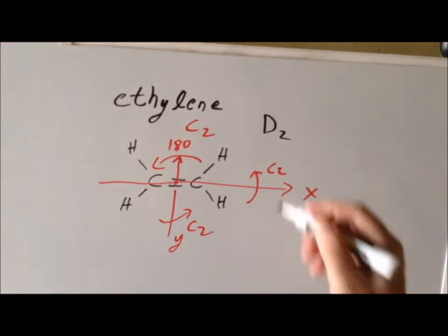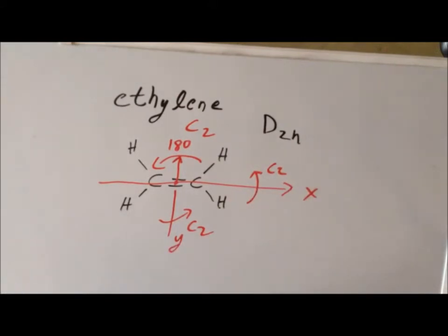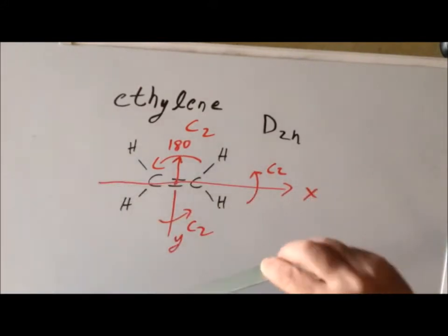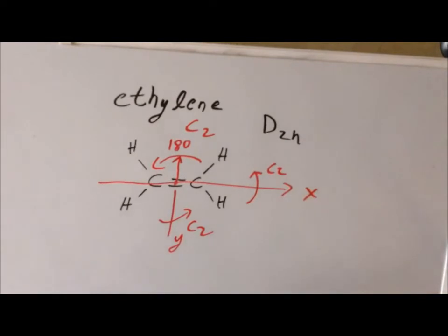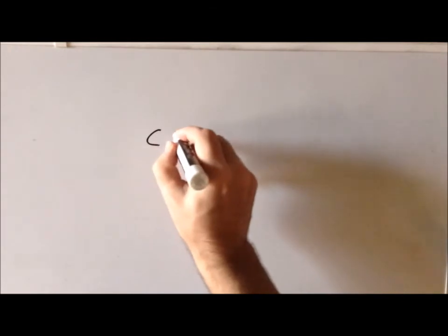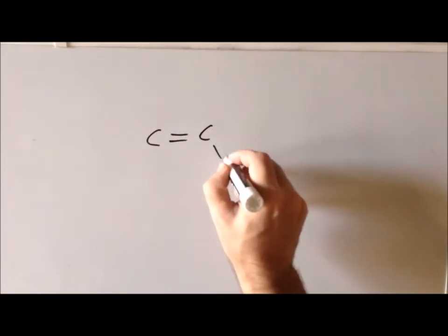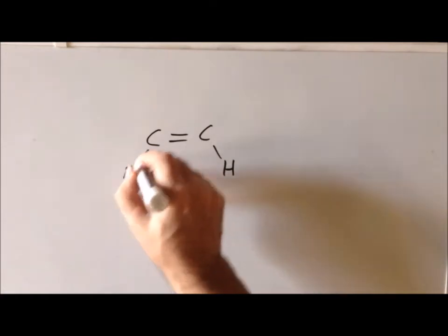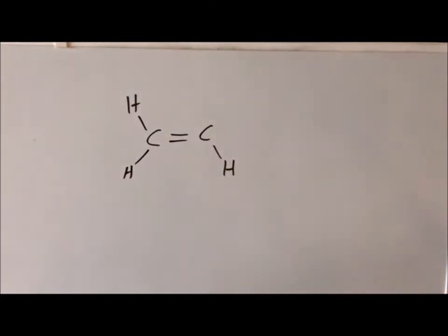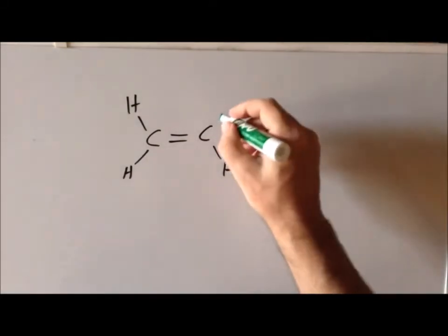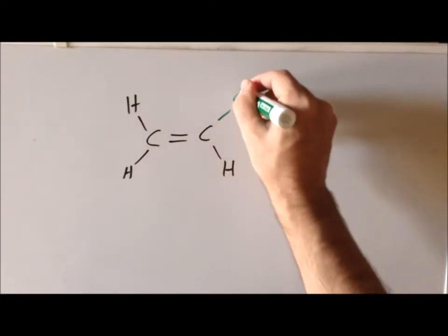This molecule has numerous mirrors: it also has mirrors in the XZ plane and in the YZ plane. Had we selected a different C2 as our high-order rotation axis, it would not have changed our point group assignment. Now let's examine some substituted ethylenes to assess their point group symmetry. The simplest substitution is replacing one hydrogen atom with a halogen, giving us chloroethylene.